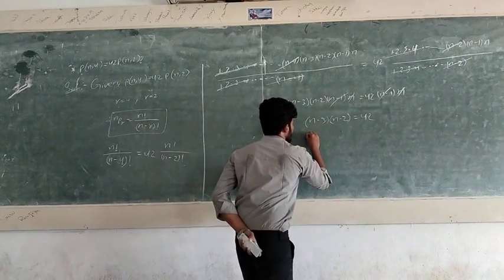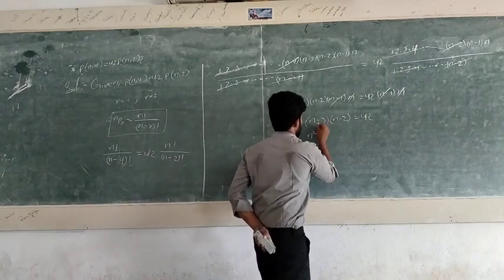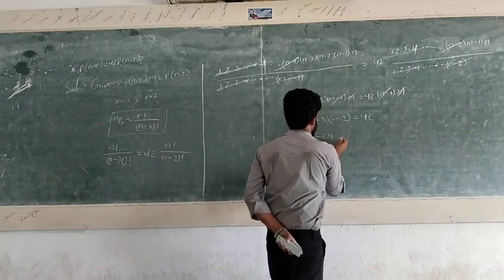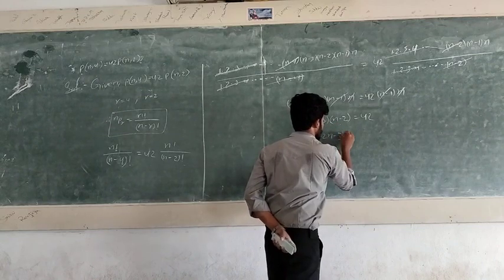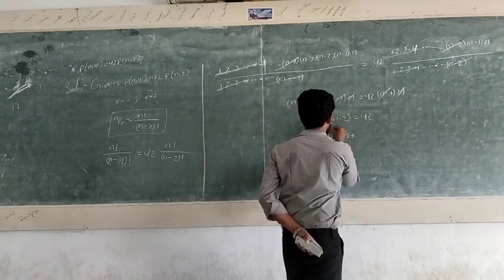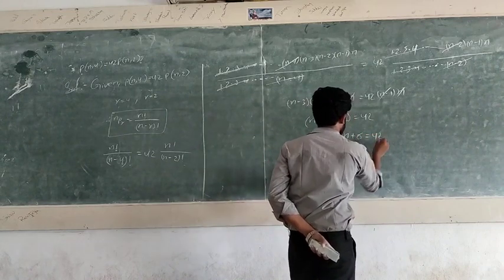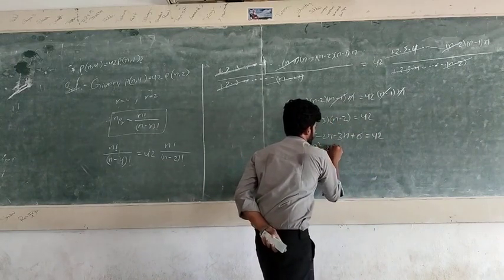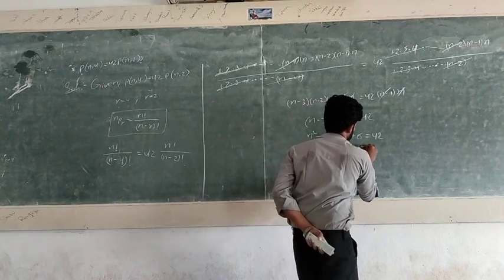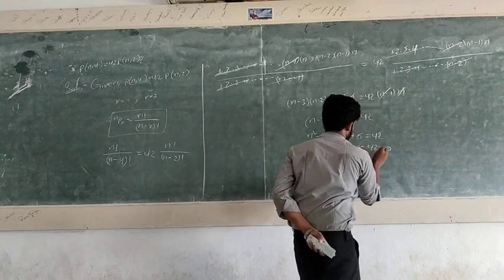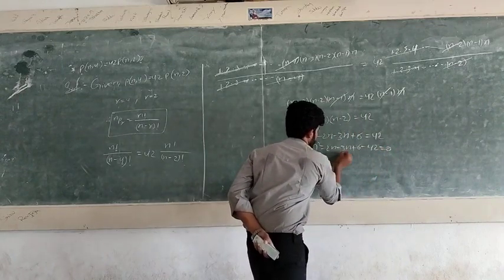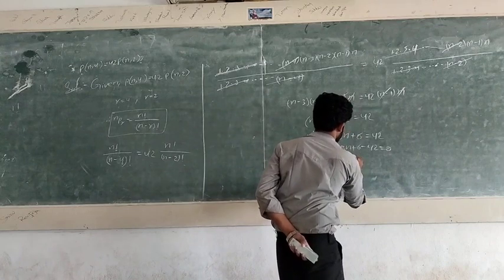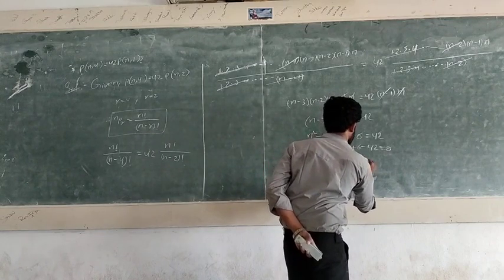Multiplying out: n² − 2n − 3n + 6 = 42, which gives n² − 5n + 6 − 42 = 0, so n² − 5n − 36 = 0.